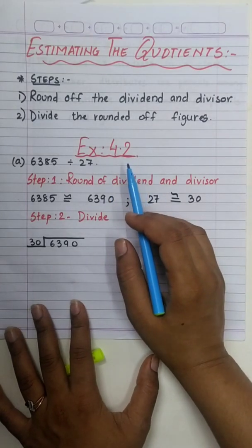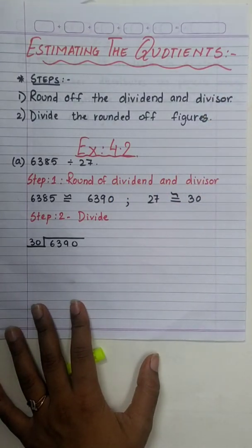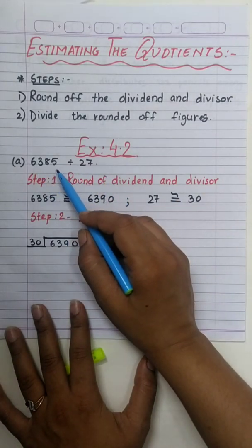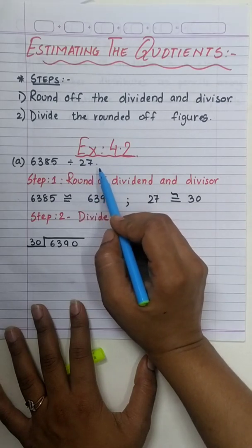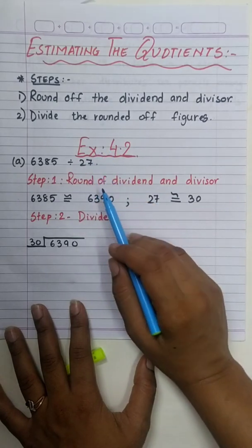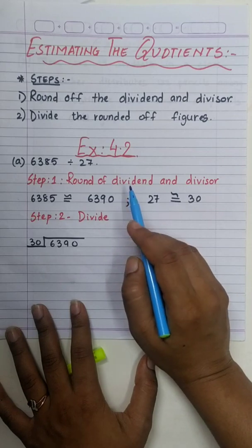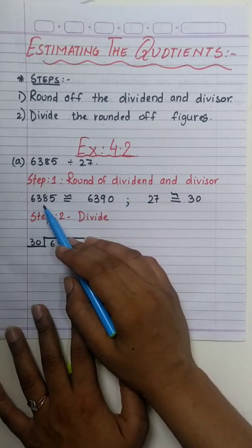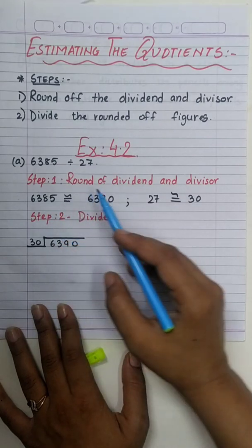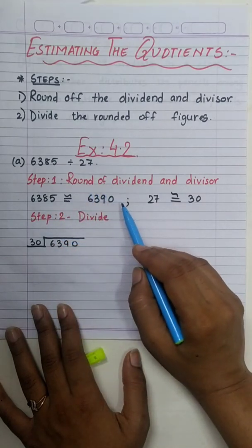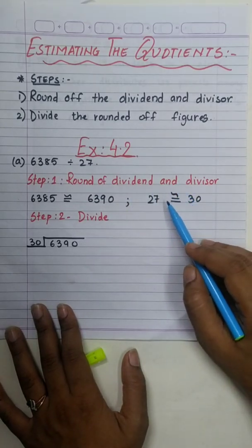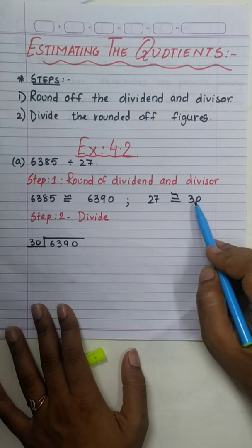In exercise 4.2, we have the same heading: estimating the quotients. The first sum is 6,385 divided by 27. As I told you, the first step is to round off the dividend and divisor. The dividend is 6,385. When we round it off, we get 6,390. Similarly, when we round off the divisor 27, we get 30.